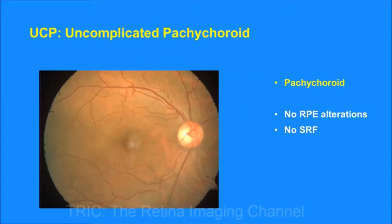Before going to pachychoroid pigment epitheliopathy, we'll see what uncomplicated pachychoroid, or UCP, means. Uncomplicated pachychoroid means the eye has pachychoroid or thick choroid; however, it doesn't have any retinal pigment epithelium atrophy or alterations, and it doesn't have any subretinal fluid.